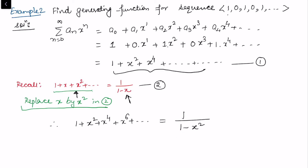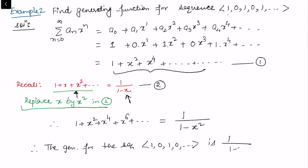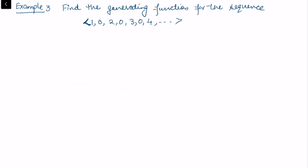We can say the generating function for the sequence 1, 0, 1, 0, ... is 1/(1 - x²). Now in this next example I want to find the generating function for the sequence 1, 0, 2, 0, 3, 0, 4, ...